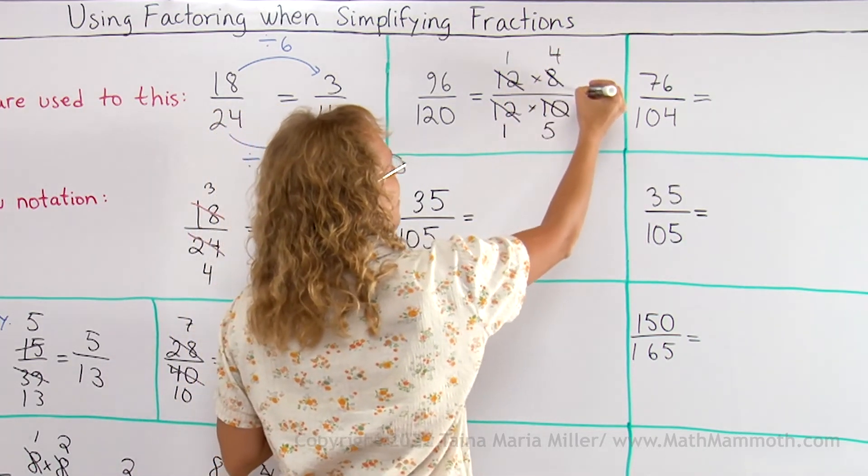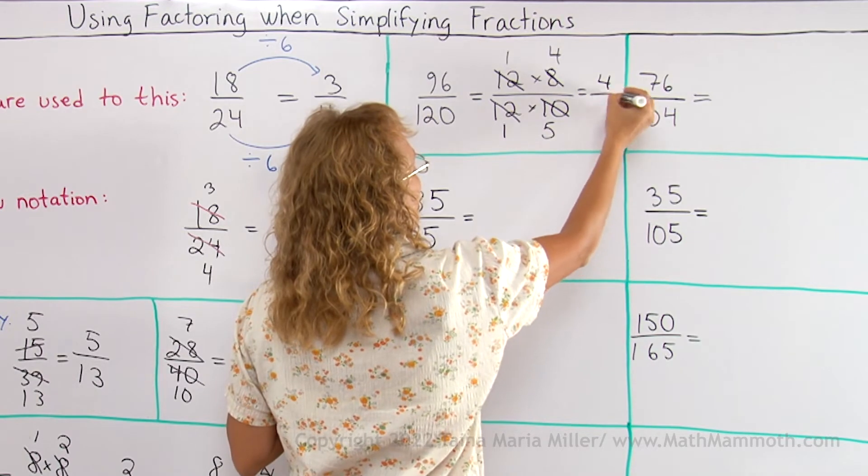So now 1 times 4, that's 4. And over here 1 times 5 is 5.